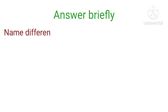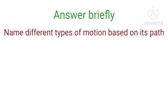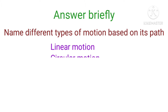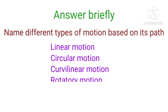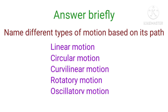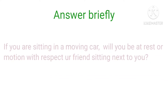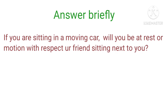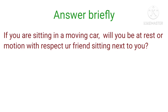Second question: name different types of motion based on the path. Answer: linear motion, circular motion, curvilinear motion, rotatory motion, oscillatory motion, zigzag motion. Third question: if you are sitting in a moving car, will you be at rest or in motion with respect to your friend sitting next to you?